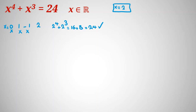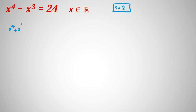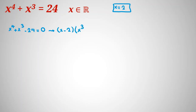Since x equal to 2 is one root, let's take everything to the left hand side: x to the 4 plus x cubed minus 24 equal to 0. Because x equal to 2 is a root, we can factorize and one factor is x minus 2.